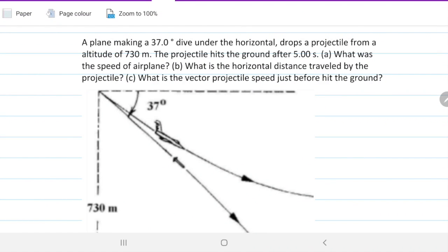A plane making a 37 degree dive under the horizontal drops a projectile from an altitude of 730 meters. The projectile hits the ground after 5 seconds. What was the speed of the airplane? What was the horizontal distance traveled by the projectile? What was the vector projectile speed just before it hit the ground?